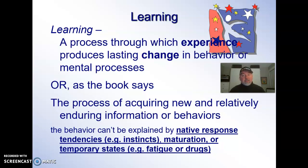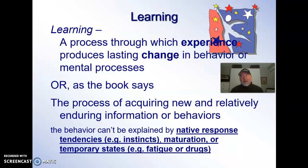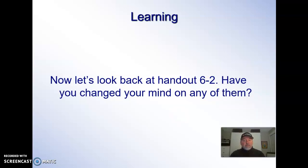Learning is experiences that produce a lasting change in behavior or mental processes. Did the computer learn? Yes — it had 100 experiences, and on the 101st, it changed its behavior based on those experiences. Does a computer behave? Sure — it makes decisions about how it's going to move a chess piece. Did the worm learn? Did experience produce a lasting change in behavior? Yes. The first 10 trials it learned which arm to go to, and in the second 10 trials it changed its behavior and improved.